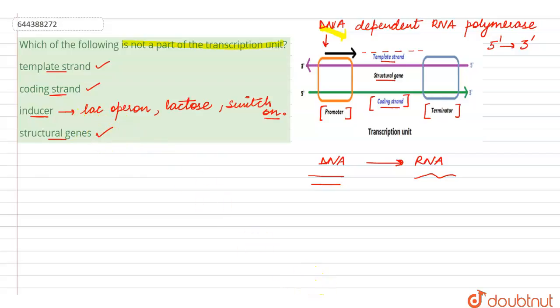We can mark option number three as the right answer because inducer is not a part of the transcription unit. So option three is the correct answer for this question. This is all about this query, thank you.